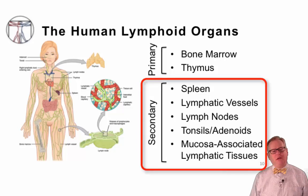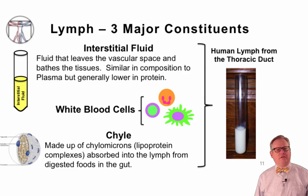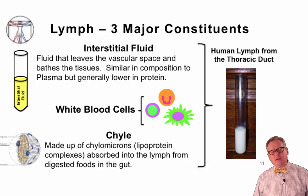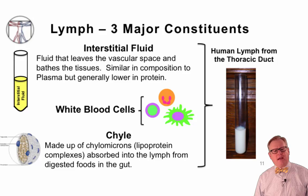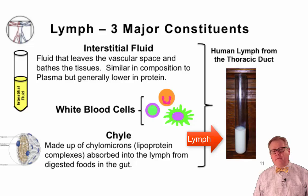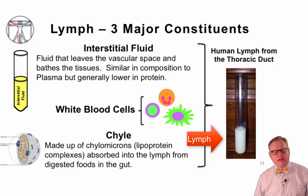Now let's review what lymph is. Lymph is composed of three major constituents: the interstitial fluid, which is the fluid that leaves the vascular space and bathes the tissues — it has a makeup much like plasma, although somewhat less concentrated in protein. Lymph also contains white blood cells that leave the vascular space and circulate through the tissues, and it includes chyle, which is made up of chylomicrons — lipoprotein complexes absorbed into the lymph from digested foods in the gut. On the right you can see that lymph has a very milky appearance because of the white blood cells and chyle present in it; this is lymph drawn from the thoracic duct of a patient.